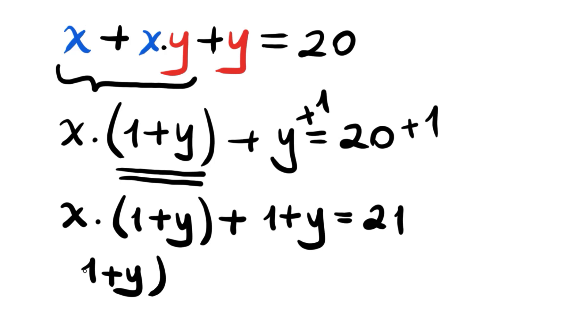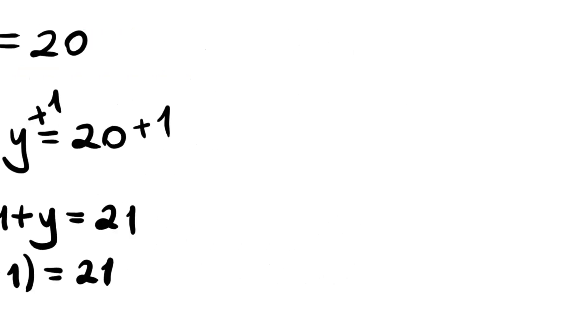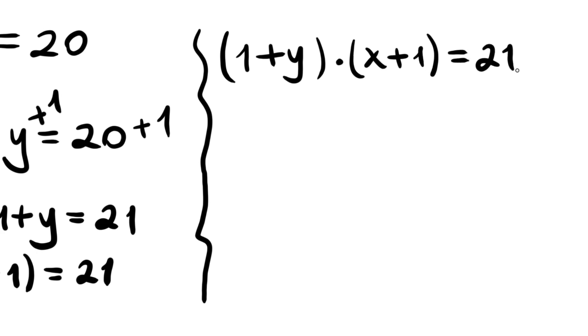Now my friends, let's continue this way. We have 1 plus Y times X plus 1 is equal to 21, and we want to find the integer solutions.